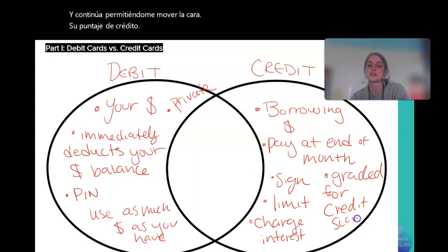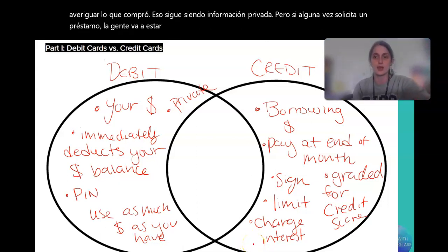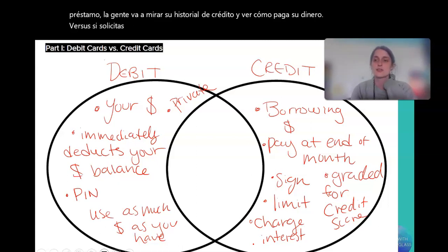Now, to be clear, this does not mean that the people seeing your credit score can figure out what you bought. That's still private information. But if you ever apply for a loan, people are going to be looking at your credit history to see how well you pay your money back. Versus if you apply for a loan, they're not looking at your spending habits from your debit card, which is linked to your checking account.